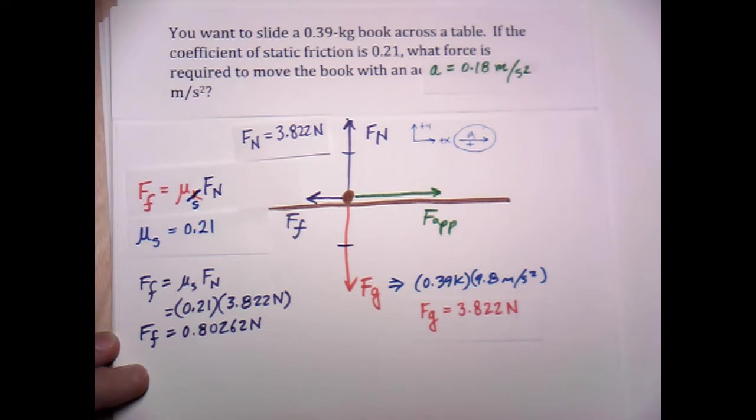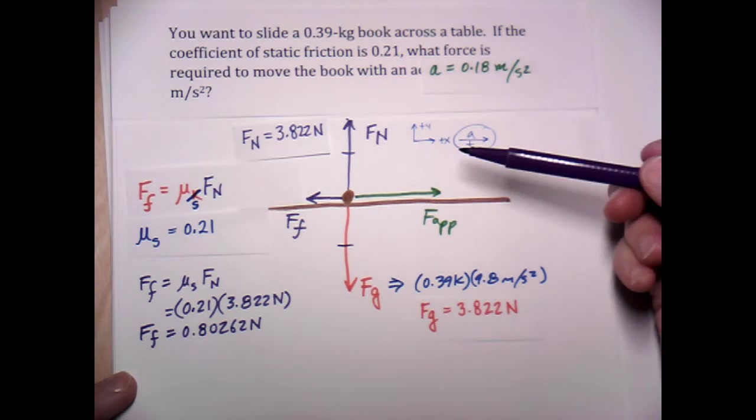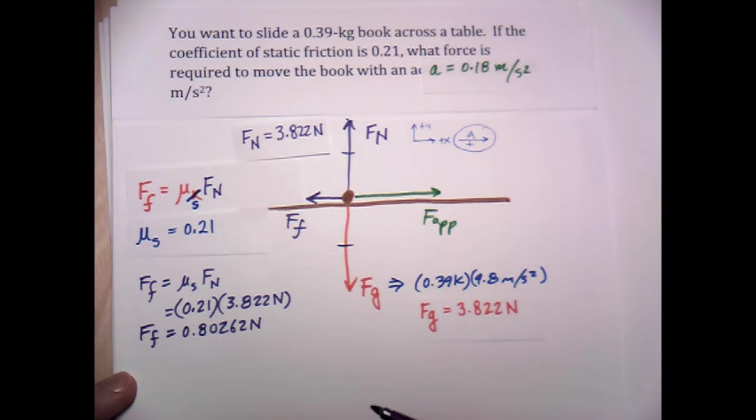And that gives us a pretty tiny value for the frictional force being equal to 0.80262. I'll carry all those digits until the end of the problem. Okay, so now we've got frictional force. We've got normal and gravitational force. What we need to figure out is what applied force will give us the acceleration that we want.